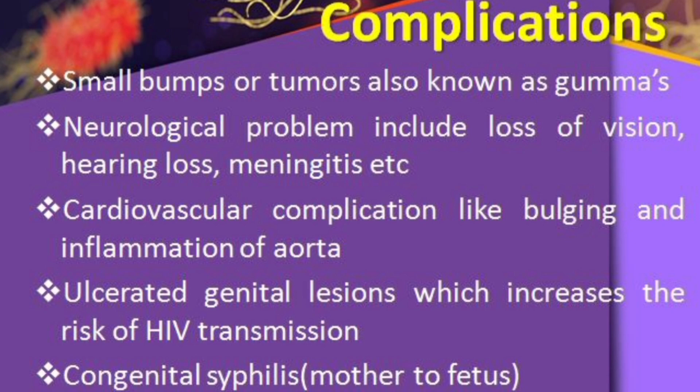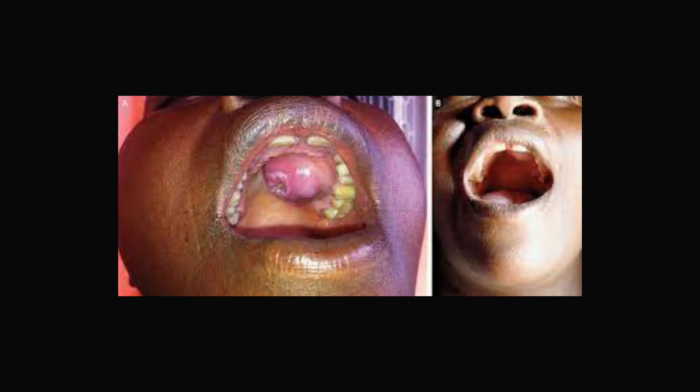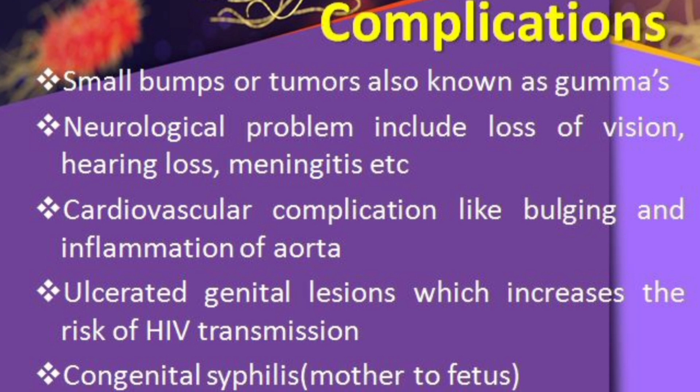Complications include gummas — tumour-like formations. Neurological problems such as loss of vision, hearing problems, and brain fever. Aneurysm at the heart level with bulging, and aortic inflammation — the aorta supplies blood to the whole body. Syphilis also increases the risk of HIV transmission from one person to another.